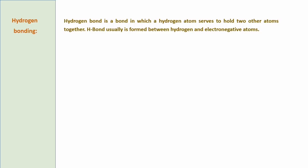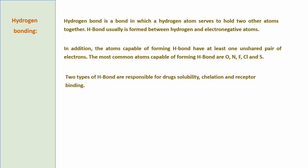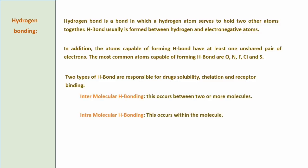अब बात करते हैं hydrogen bonding की और उसके drug biological action पर effect की। Hydrogen bond से solubility affect होती है और solubility से absorption, जो further drug's biological action को affect करता है। Hydrogen bond ऐसा bond है जिसमें एक hydrogen atom दो other molecules को bind करता है। Hydrogen bond usually electronegative atom और hydrogen के बीच बनता है — oxygen, nitrogen, fluorine, chlorine, sulfur ऐसे groups हैं जो generally hydrogen bonds form करते हैं। Within drug molecules, hydrogen bonds responsible होते हैं drug solubility, chelation, और drug-protein binding के लिए। Drugs में दो तरह के hydrogen bonds पाए जाते हैं: intermolecular और intramolecular।